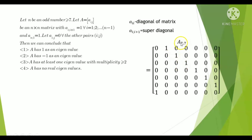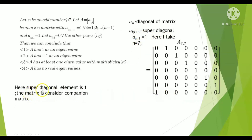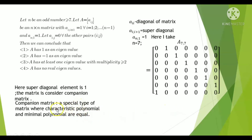Taking n equals seven, a(n, 1) equals one. Here the super-diagonal elements are one, and this matrix is called a companion matrix. A companion matrix is a special type of matrix where the characteristic polynomial and the minimal polynomial are equal.